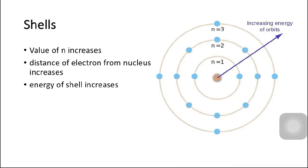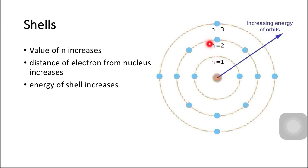As the value of n increases, the distance of the electron from the nucleus increases, and as a result, the energy of the shell also increases. This diagram of an atom shows the nucleus in the center with three shells: n1, n2, and n3. n1 has the lowest distance from the nucleus, so it has the lowest energy, whereas n3 has the highest distance, so it has the highest energy.